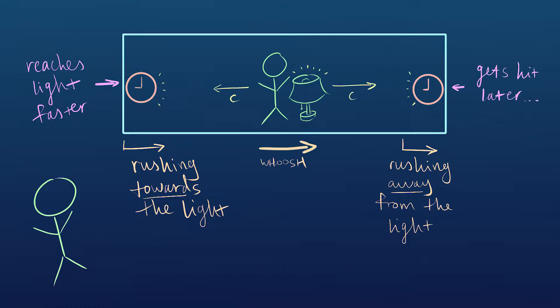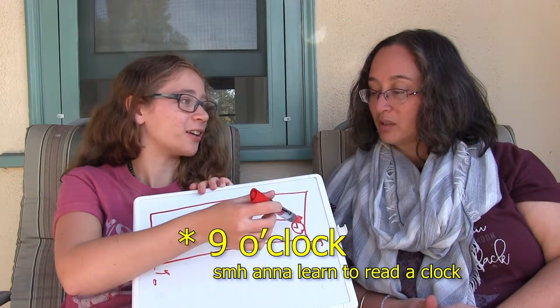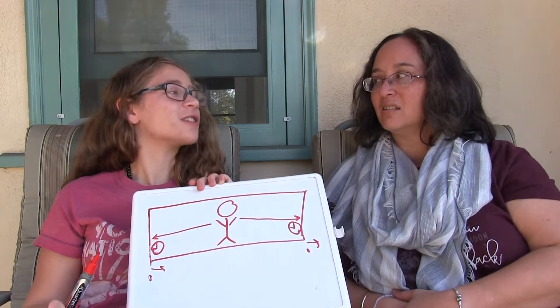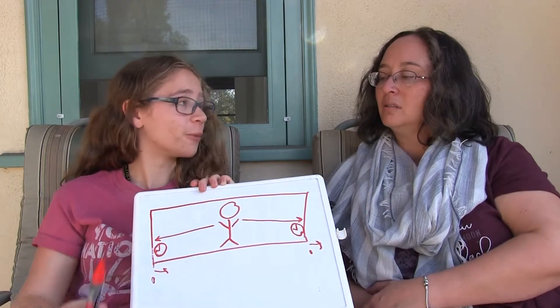This one is going to read an earlier time because when this one gets hit at three o'clock, this one can't read three o'clock yet because it hasn't been hit yet. So weird. So clocks that are synchronized in your frame are not synchronized in my frame if they are far apart from each other.